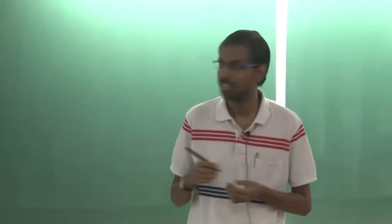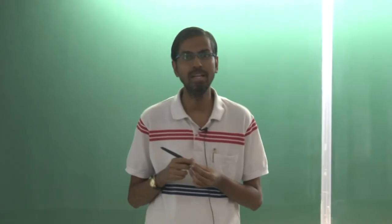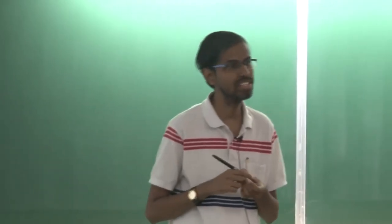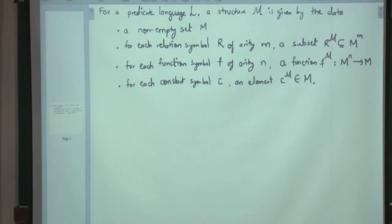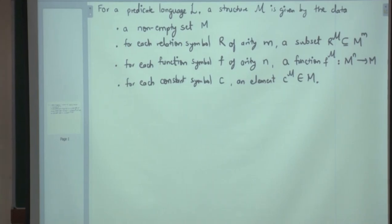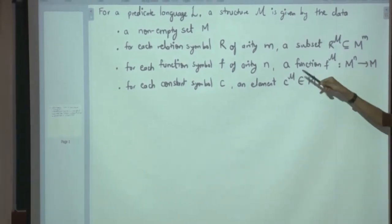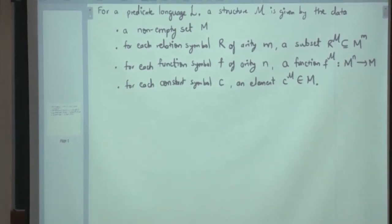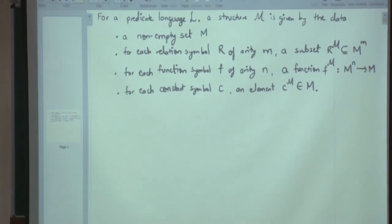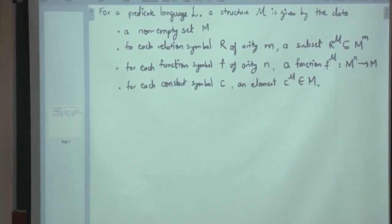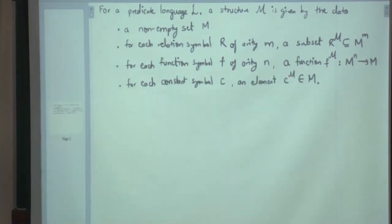Let's begin. We are looking at predicate logic. We have looked at the definition of structures. The definition is on the screen: you start with a non-empty universe, and for each symbol in your predicate language, you have some appropriate data — a subset of appropriate arity, a function of appropriate arity for a relation symbol and function symbol, and a specific element for a constant symbol.